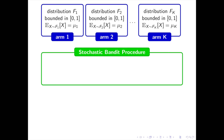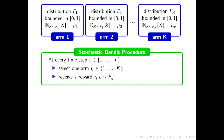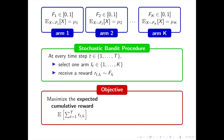The arm distributions f1, f2, …, fk, as well as their expectations µ1, µ2, …, µk, are unknown to us. The stochastic bandit procedure is the following: at every time step t = 1, 2, …, up to a large integer T called the horizon, you select one arm i_t in {1, …, k}, and then receive a reward R_{t,i_t} drawn from the chosen arm distribution F_{i_t}.